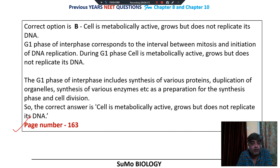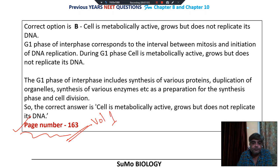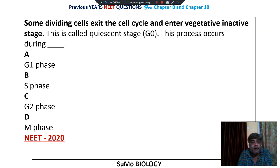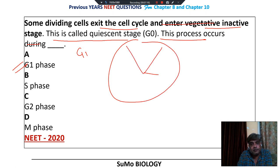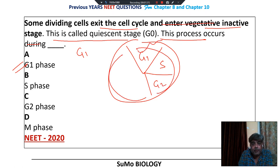This is mentioned on NCERT page number 163 of volume 1, Chapter 10. Some dividing cells exit the cell cycle and enter a vegetative inactive stage called the quiescent stage or G0 phase. This occurs during G1 phase — from G1, the cell may exit cell division and enter the vegetative inactive state called G0.